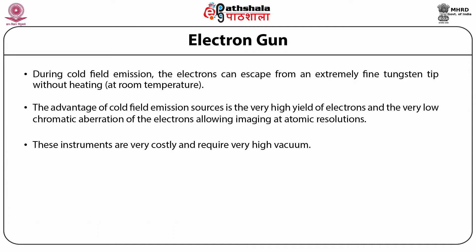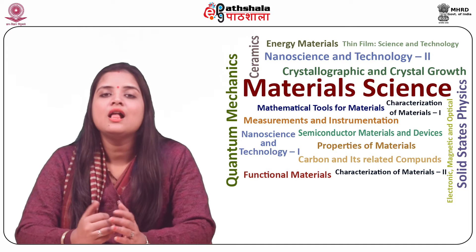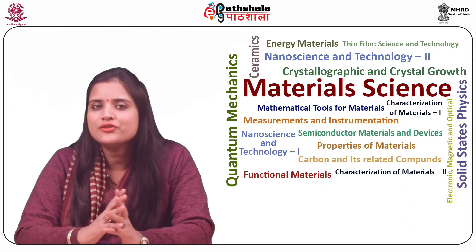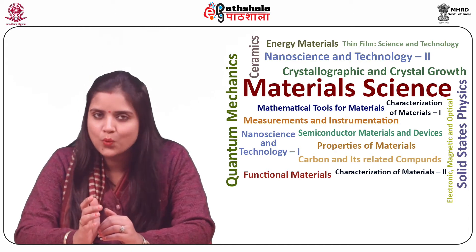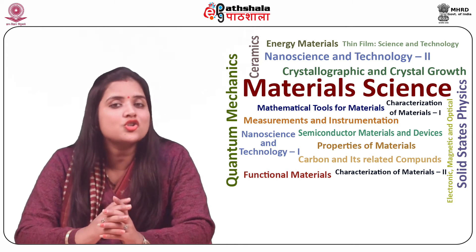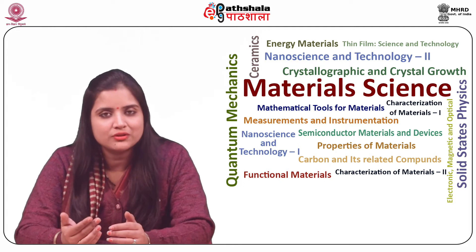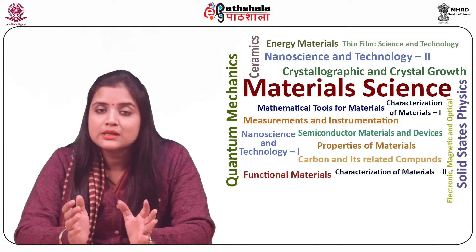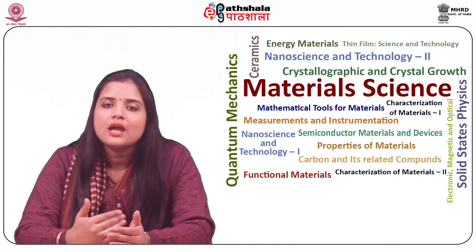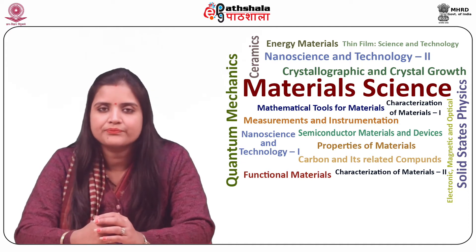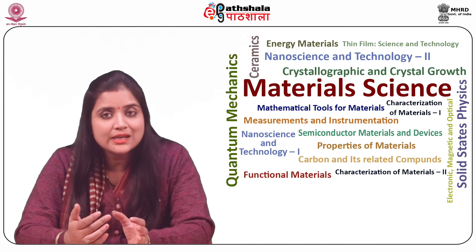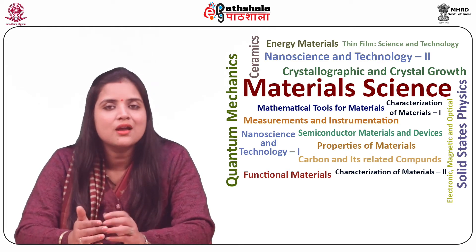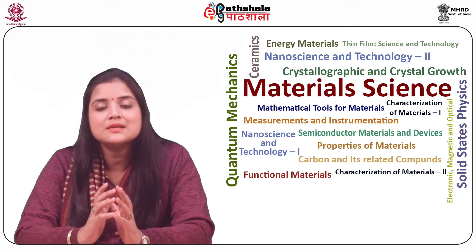The working of the electron gun can be controlled based on three parameters: the first is the accelerating voltage; the second is the current of the filament and therefore its temperature; and the third is the voltage cap or bias device voltage. The temperature of the filament tip is controlled by the filament current, which in turn controls the amount of emitted electrons. The filament current is increased until the number of emitted electrons no longer increases, meaning the filament is saturated, in order to maximize emission.